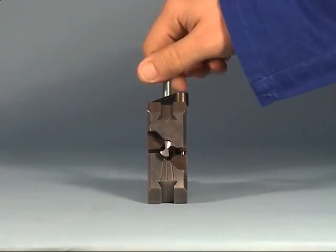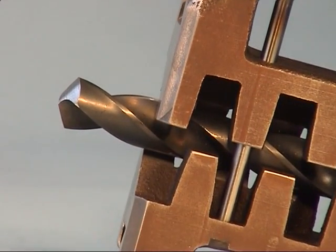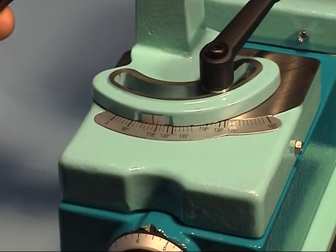Tighten the prism on the knurled screw. With that, the drill is properly adjusted. It doesn't have to be readjusted until the grinding process is finished.